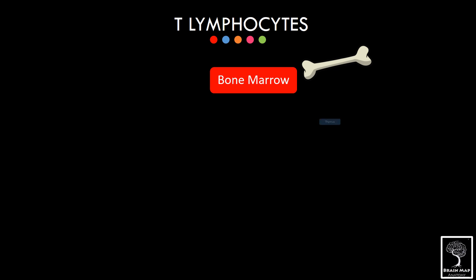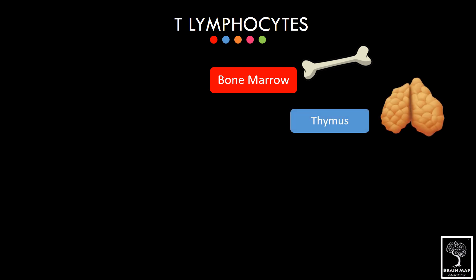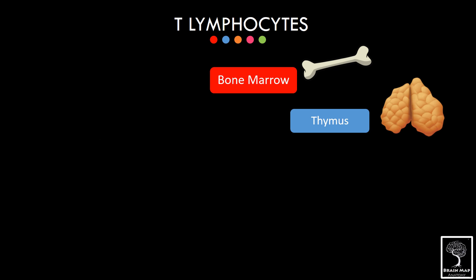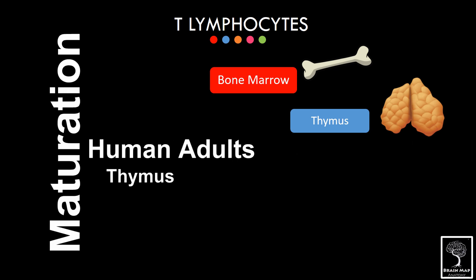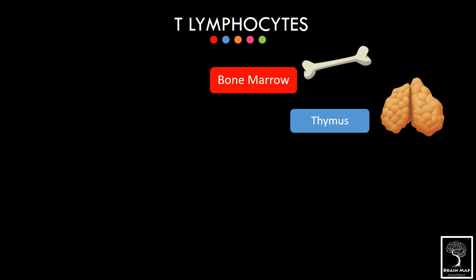immature T lymphocytes enter the thymus and these cells are now called thymocytes. Maturation of the thymocytes occurs inside the thymus, and the cells are educated and trained to distinguish between self and non-self antigens.